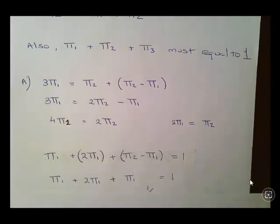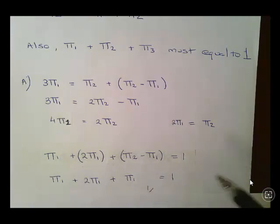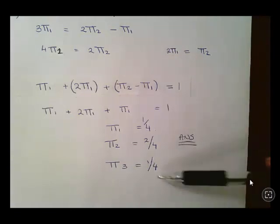So essentially what we can do is simplify that. π2 is 2π1, so 2π1 minus π1 is π1. So we end up with π1 plus 2π1 plus π1 is equal to 1. Necessarily, π1 is equal to 1/4. π2 is equal to 2/4 or 1/2. And π3 is equal to 1/2. So that is our stationary distribution for this transition matrix and this chain.